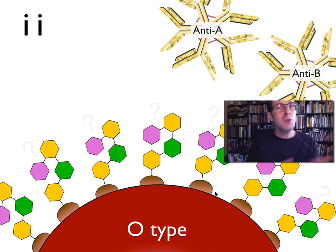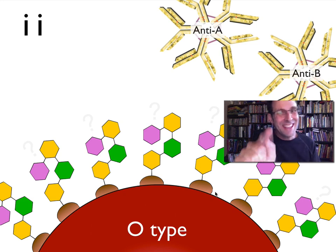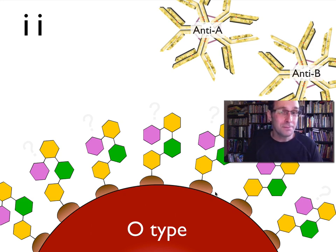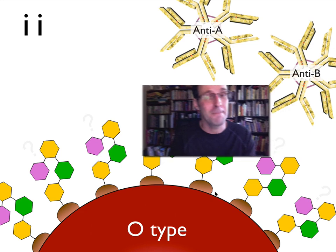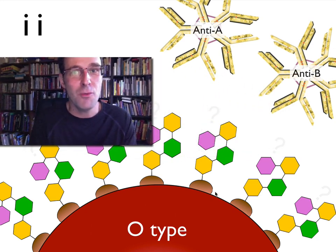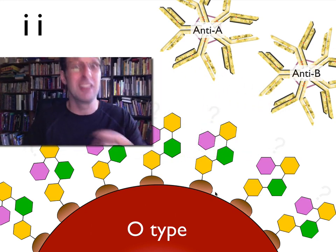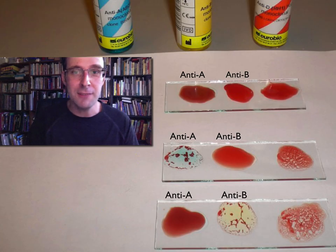But if you do it the other way around — if you take A-type blood and put it into a person with O-type blood — those anti-A antibodies will stick all over that blood and attack it, and that will cause those red blood cells to agglutinate.